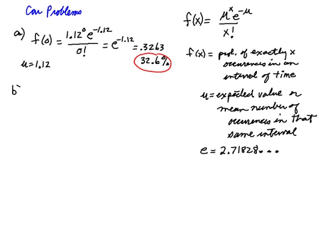Question B: If you purchased a Toyota in the 2010 model year, what is the probability that in the past 12 months prior to the 2013 date, the car had two or fewer problems? Two or fewer would be f(0) + f(1) + f(2). And we already know what f(0) is, 0.3263.